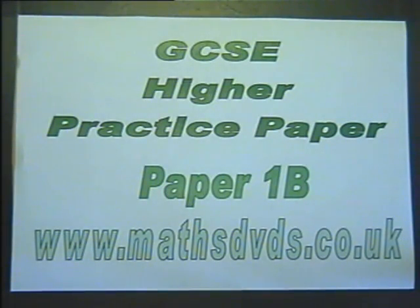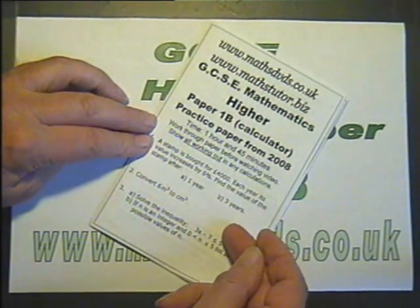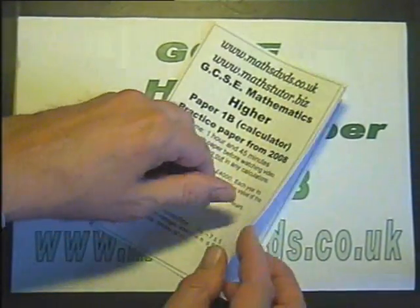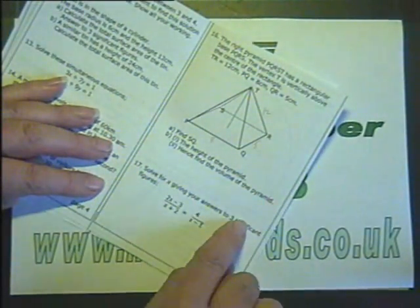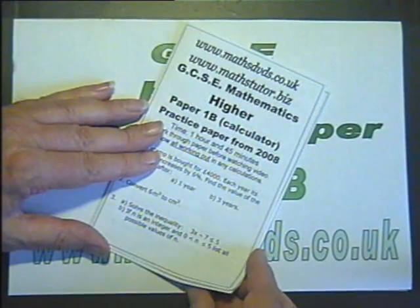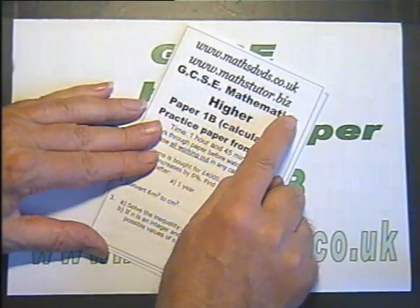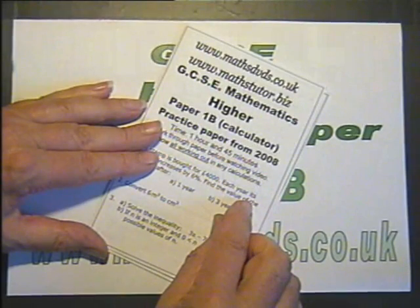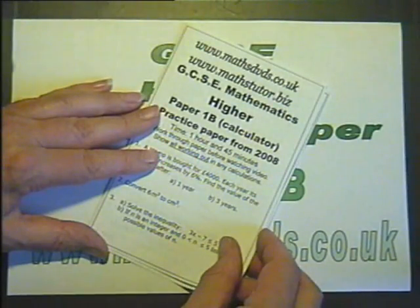Video clip from MassTutor.biz and MassDVDs.co.uk, GCSE Higher Practice Paper 1B. The start of the questions are usually easy or very easy, but they get harder as you go through. We're going to look at question number 17. If you want to see all the material, go to MassTutor.biz or MassDVDs.co.uk to see all available DVDs and the specific paper in its entirety.